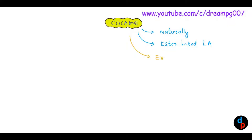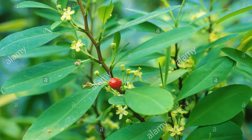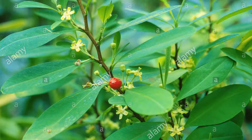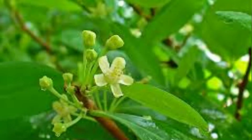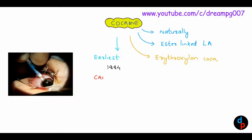This naturally occurring local anesthetic is obtained from the plant Erythroxylon coca — specifically from its leaves. Cocaine was first used as a local anesthetic for ocular surgery by Karl Koller in the year 1884.